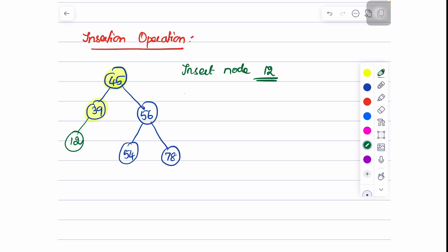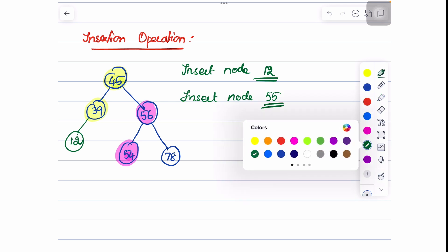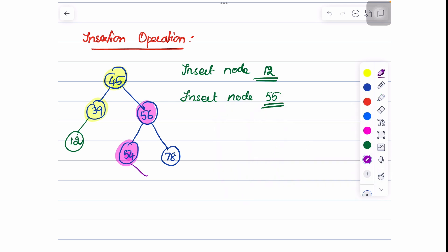Now, say we are supposed to insert node 55. First, check whether 55 is lesser or greater than the root node — it is greater, so move to the right part of the tree. Node 55 is lesser than node 56, so move to the left part. Comparing with node 54, 55 is greater, so we insert node 55 as the right child of node 54. This is how the insertion operation is performed.